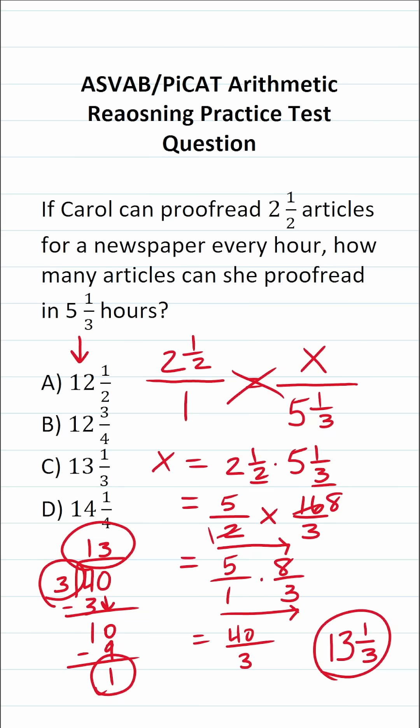So the answer to this one is: in five and one third hours, she can proofread 13 and one third newspaper articles. So this one is C.